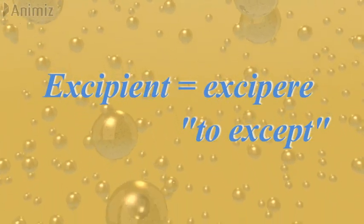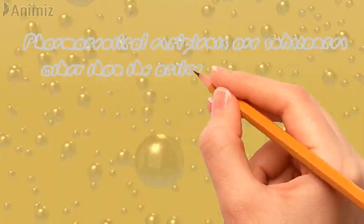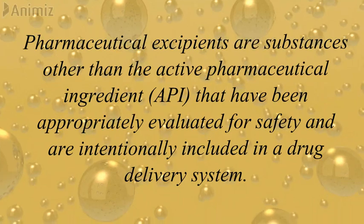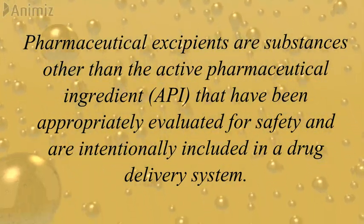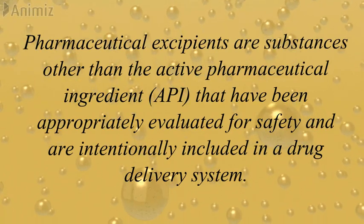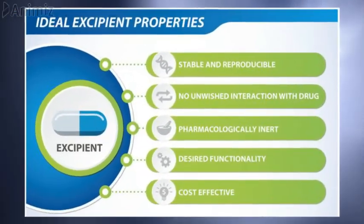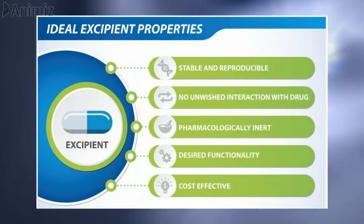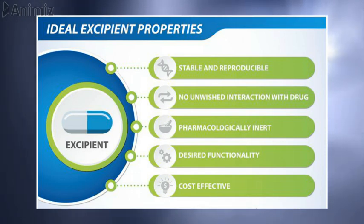The term excipient is derived from the Latin term 'excipere' which means to accept. Pharmaceutical excipients are substances other than the API that have been appropriately evaluated for safety and are intentionally included in a drug delivery system. Ideal properties include: stable and reproducible, no interaction with the drug, pharmacologically inert, desired functionality, and low cost — it should not be costlier than the API.